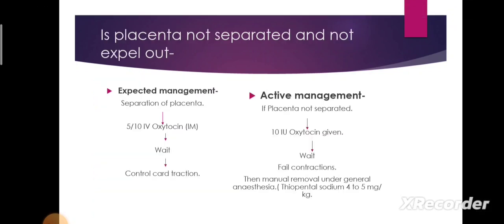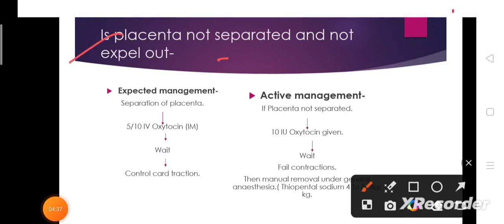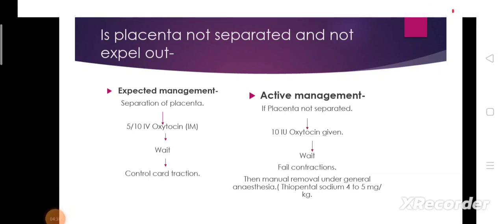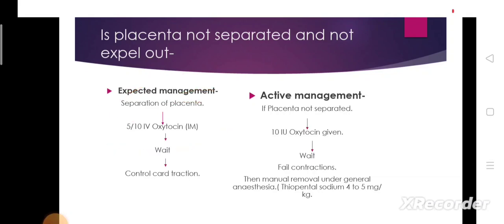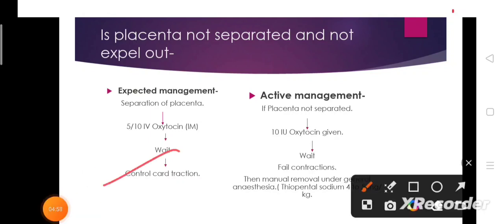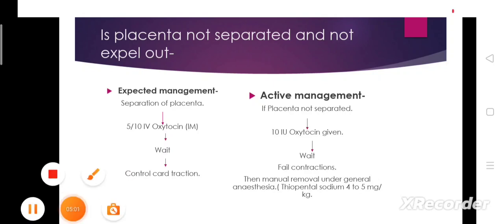If the placenta is not separated, it is managed by expectant or active management. In expectant management, if the placenta has separated, IV or IM oxytocin should be given, then wait, followed by controlled cord traction.